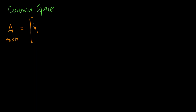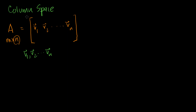So this first one, second one, and I'll have n of them — because I have n columns. Each of these column vectors are going to have how many components? So v1, v2, all the way to vn. This matrix has m rows, so each of these vectors are going to have m components — they're all members of Rm. The column space is defined as all of the possible linear combinations of these column vectors.